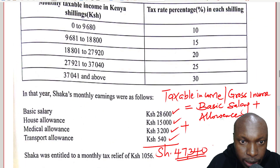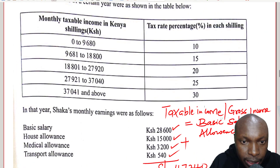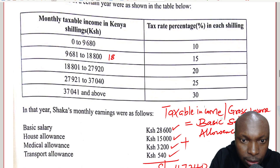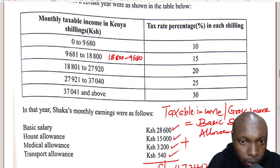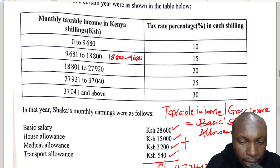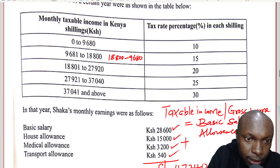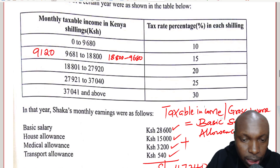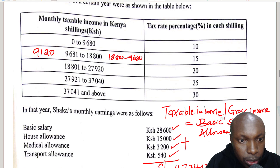We go to the first slab, which is 9,680, and multiply by the percentage in the first slab, which is 10%. So the tax in that slab will be 968. We go to the second slab. To get the size of the second slab: 18,000 subtract 9,680 gives 9,120. So for that slab we have 9,120 multiplied by 15%.